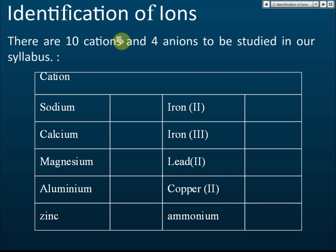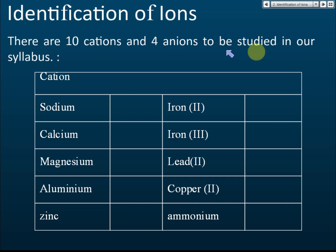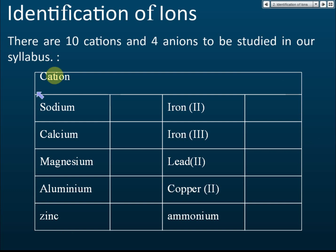Identification of ions — there are 10 cations, which are the positive ions, and 4 anions, which are the negative ions, to be studied in our syllabus — the SBM syllabus. These are the 10 cations that you need to know.